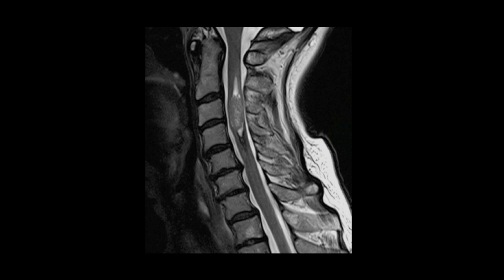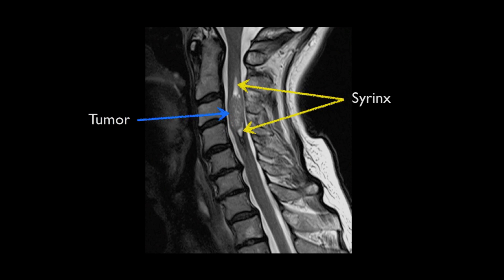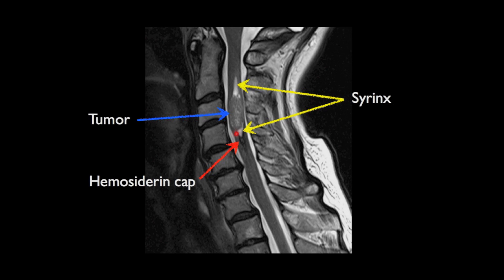The morphology of ependymomas is best appreciated on sagittal images. It is composed of the tumour itself, located centrally within the cord, and is often associated with an adjacent syrinx extending above and/or below the tumour. Characteristically, these lesions have a tendency to bleed, and as a result, hemosiderin staining at one or either end of the tumour is common. This is known as a hemosiderin cap, and although not pathognomonic, it is certainly very suggestive of this entity.